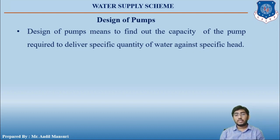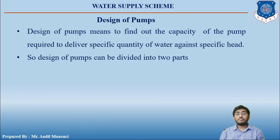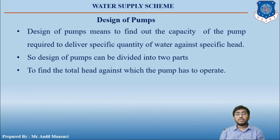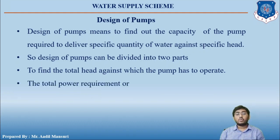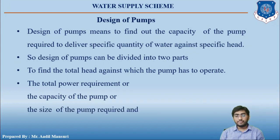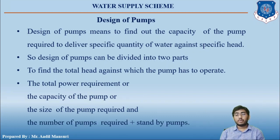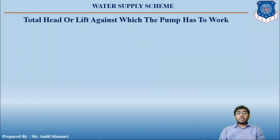Design of pumps can be divided into two parts. The first is to find out the total head against which the pump has to operate — that is the total height to which the water is to be pumped. The second is the total power requirement, or the capacity and size of the pumps required, and the number of pumps required plus standby pumps.